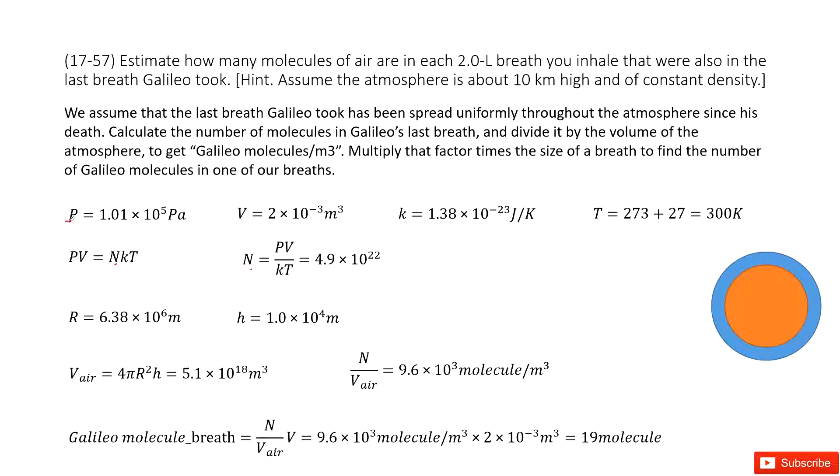First one, pressure, standard pressure. And then volume, it tells us just 2 liters. Convert units to the meter cube. And k is a constant. Temperature, so the air's temperature we can consider is 27 centigrade, and then it's around 300 Kelvin.